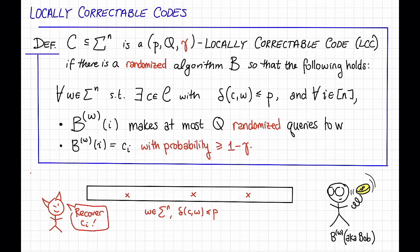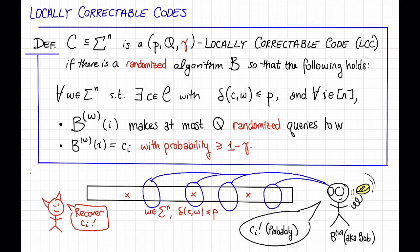So Bob flips some coins, makes some random choices, and based on those random choices, Bob is going to make at most capital Q queries. And as before, he's supposed to come up with CI, but now he only needs to do it with high probability. Notice that this time the adversary can't do the same trick that he did on the previous slide because he does not know when he comes up with I and when he comes up with his errors how Bob's coins are going to land.